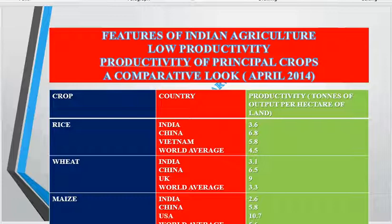Similarly, for wheat, the world average is 3.3 tonnes per hectare, but India is at 3.1, China is 6.5, and the UK is 9. For maize, India is 3.6 against a world average of 5.6, China at 5.8, and the US at 10.7.